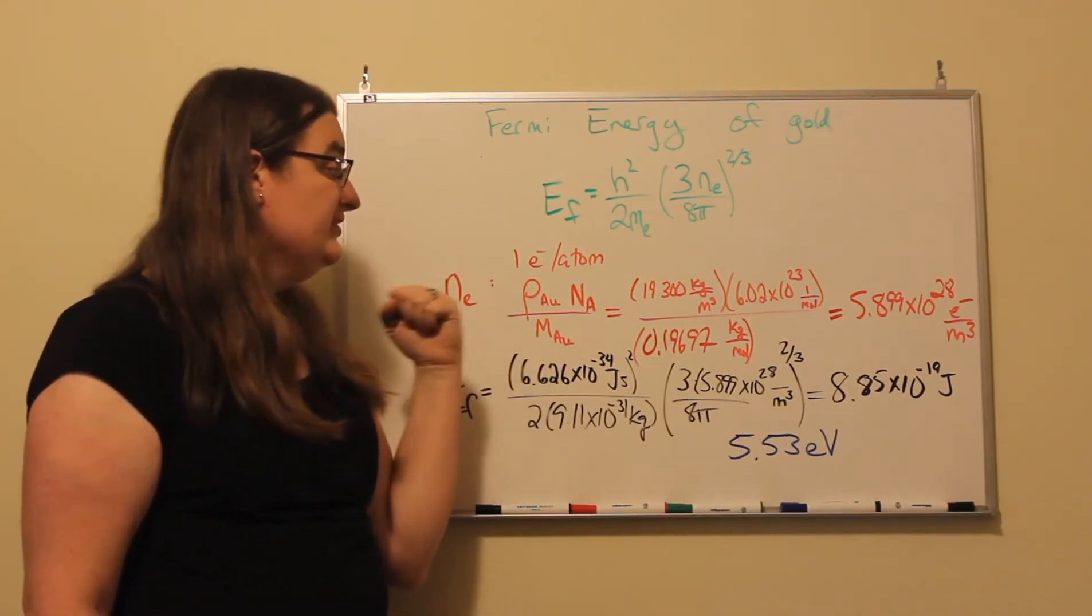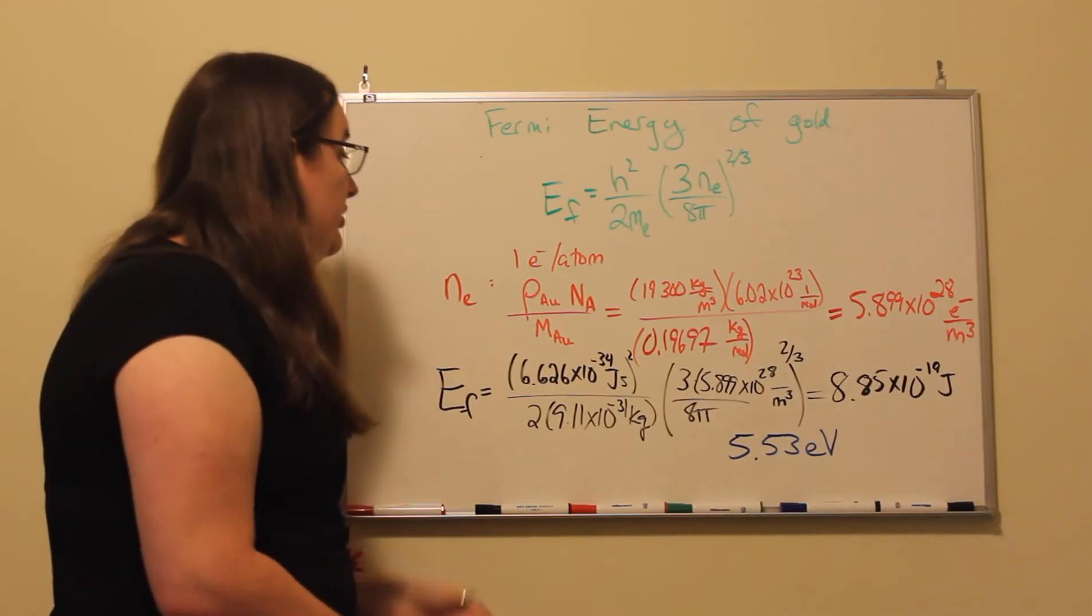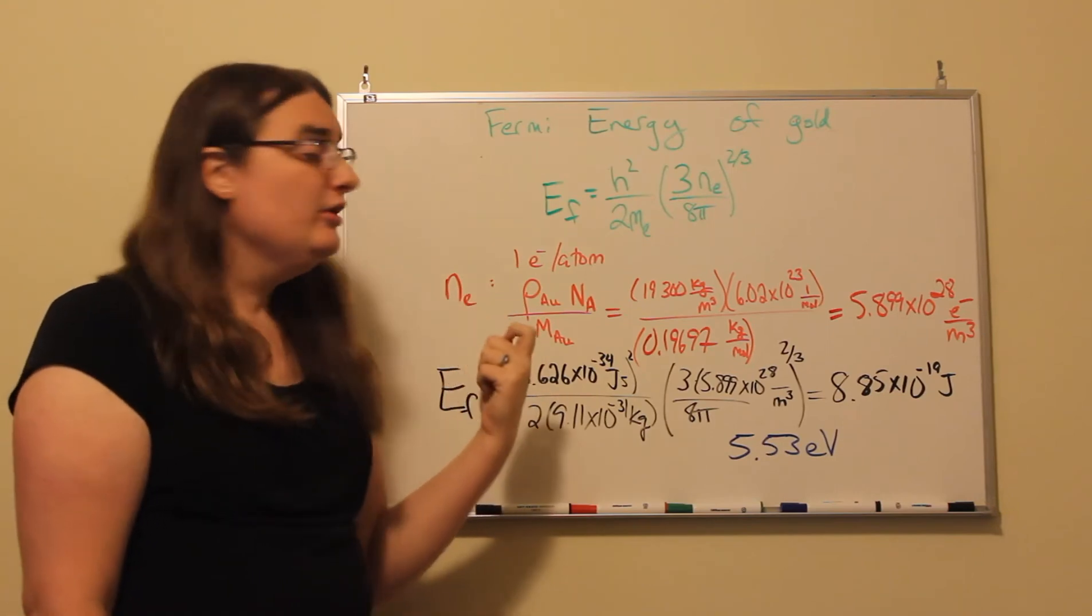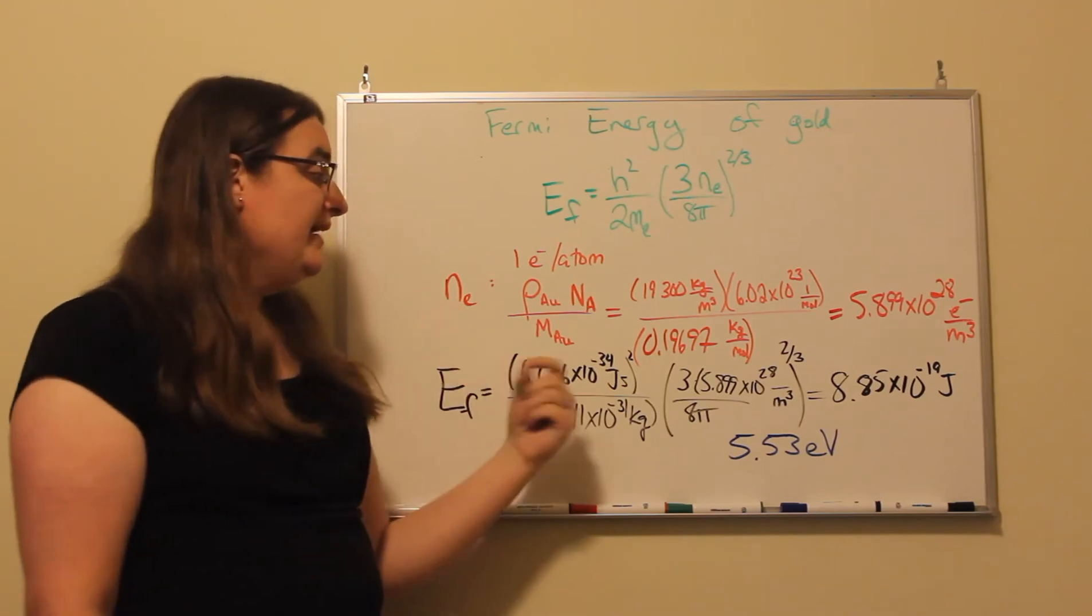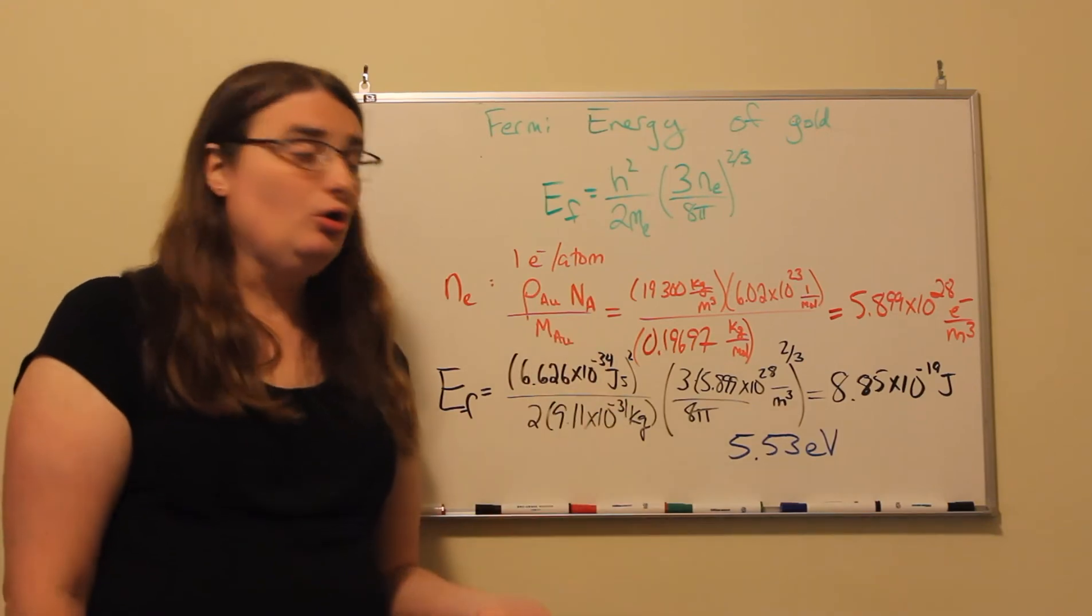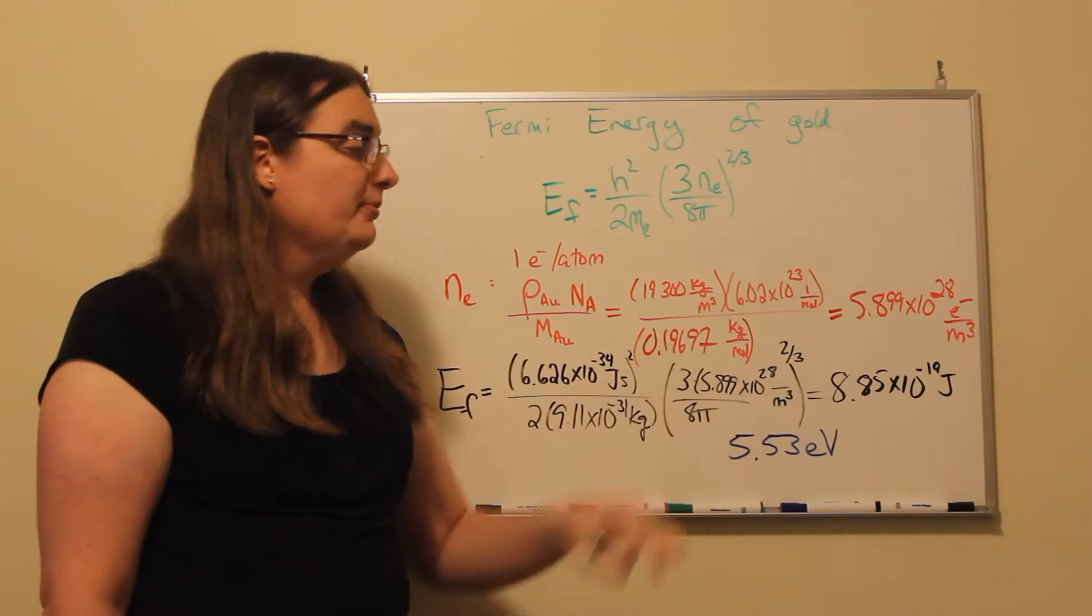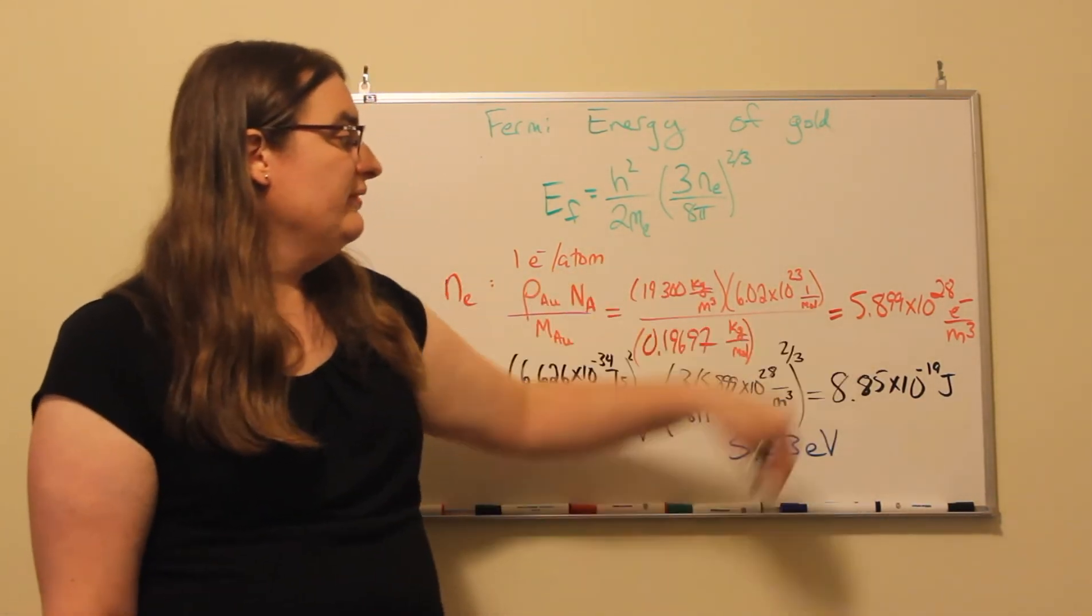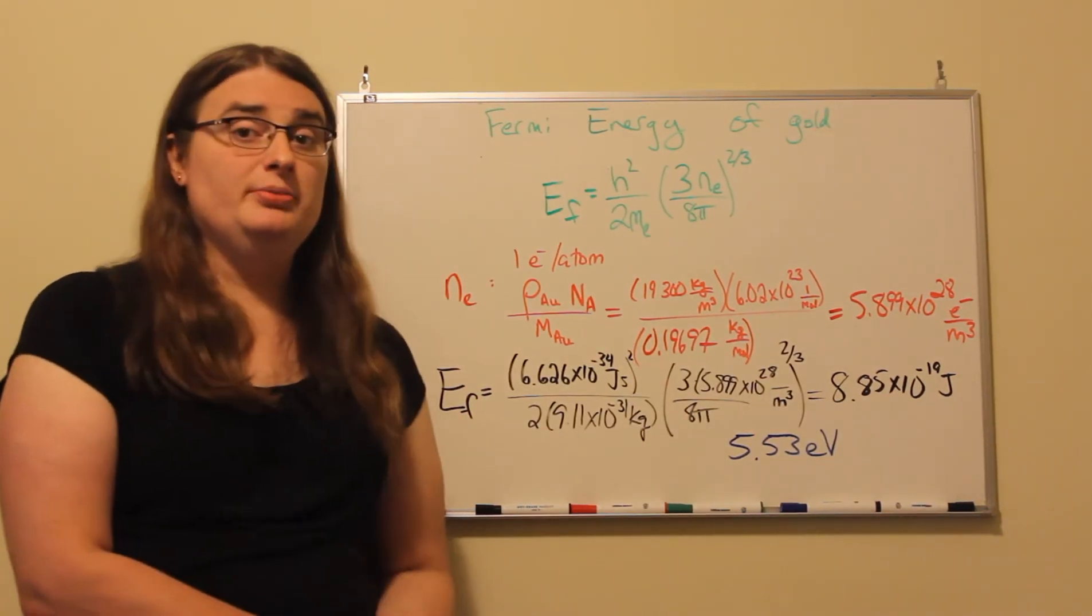So for gold, the density is 19,300 kilograms per cubic meter. Now to figure out how many electrons per cubic meter we have, we take that density and divide by the molar mass. The molar mass of gold is 0.19697 kilograms per mole. So that gives me the number of moles per cubic meter, multiply by Avogadro's number, and that means that in gold there should be 5.899 times 10 to the 28 free electrons per cubic meter.